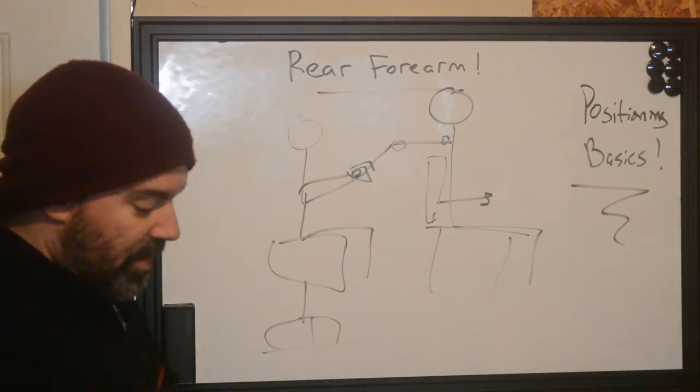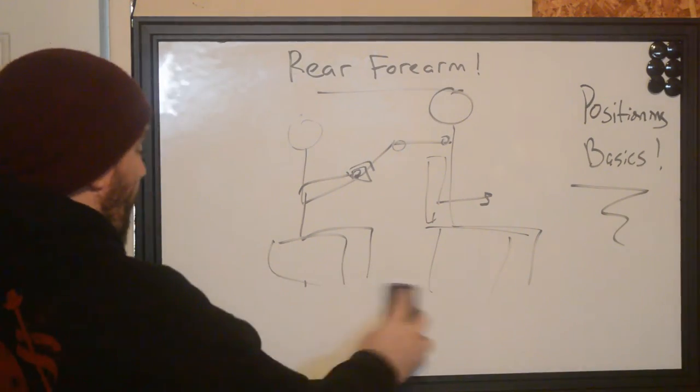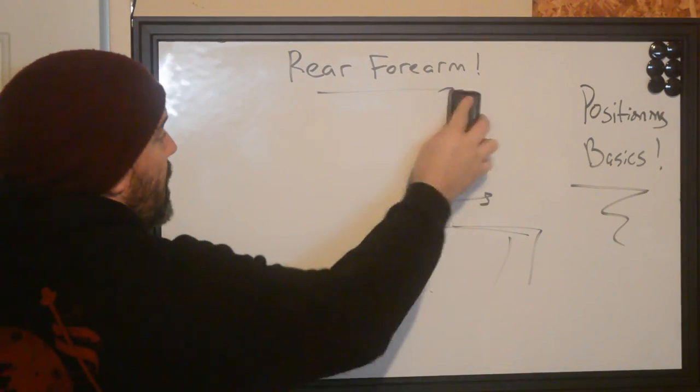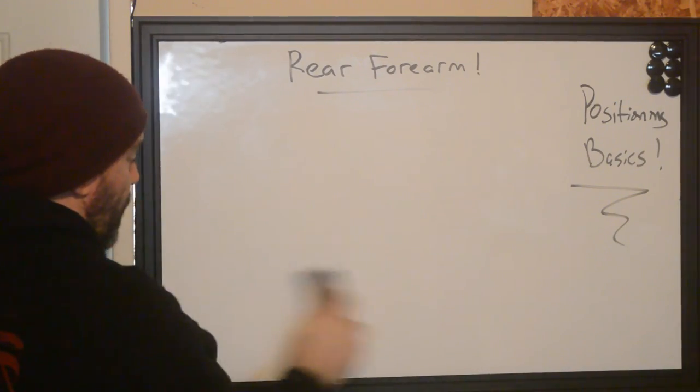This is great for people who do conventions that forget arm rests. Done it a bunch of times. That's basically it. Those are the two easiest ways to be able to do the rear forearm.